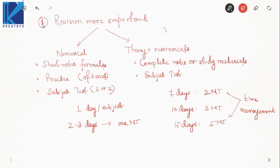You should only revise concepts that are relevant to GATE. For example, in engineering maths, partial differential equations are not asked in Electrical and EC, so those students can leave that. Similarly in numerical methods, only one or two methods are asked in GATE — revise those specific methods, not all of them. Be GATE-specific. Revise only the topics relevant to GATE, not everything taught in classes or standard books. We don't have that much time left, so going after the entire syllabus is not a good idea.